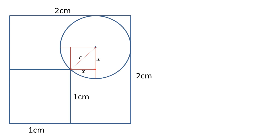Since we have a right angle triangle, we can use Pythagoras' theorem to link r and x together. The hypotenuse r² equals x² + x², which is 2x².